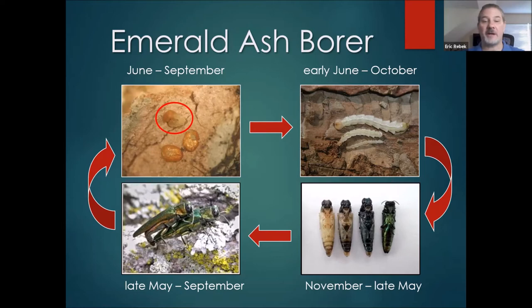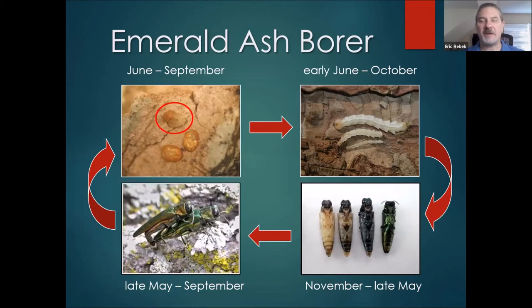This is primarily a one-year life cycle, although with emerald ash borer, a certain percentage of the population may wait two years to emerge from a tree. In very rare cases, some beetles may wait even three years. So typically it's a one-year life cycle, but we can have exceptions where it might be longer.